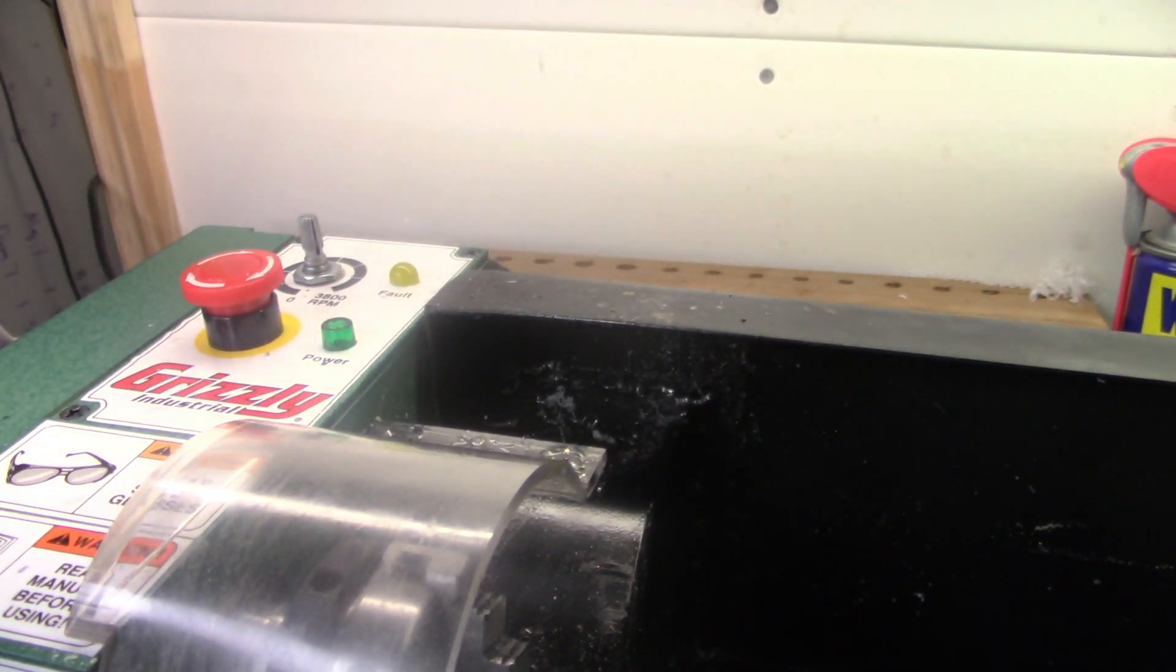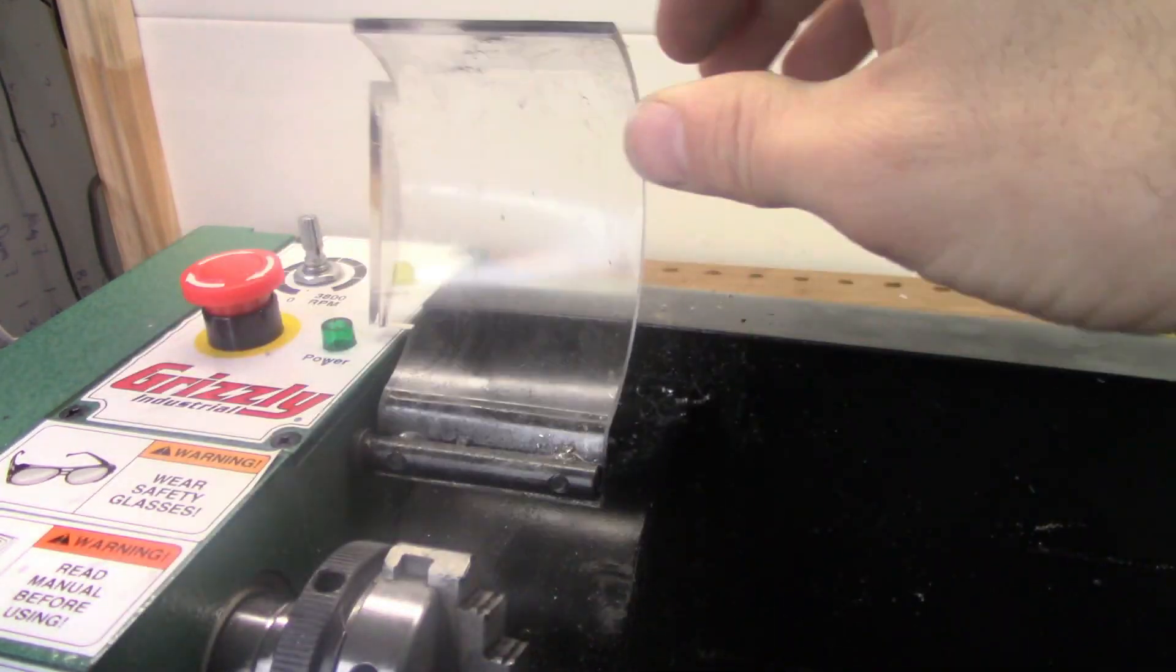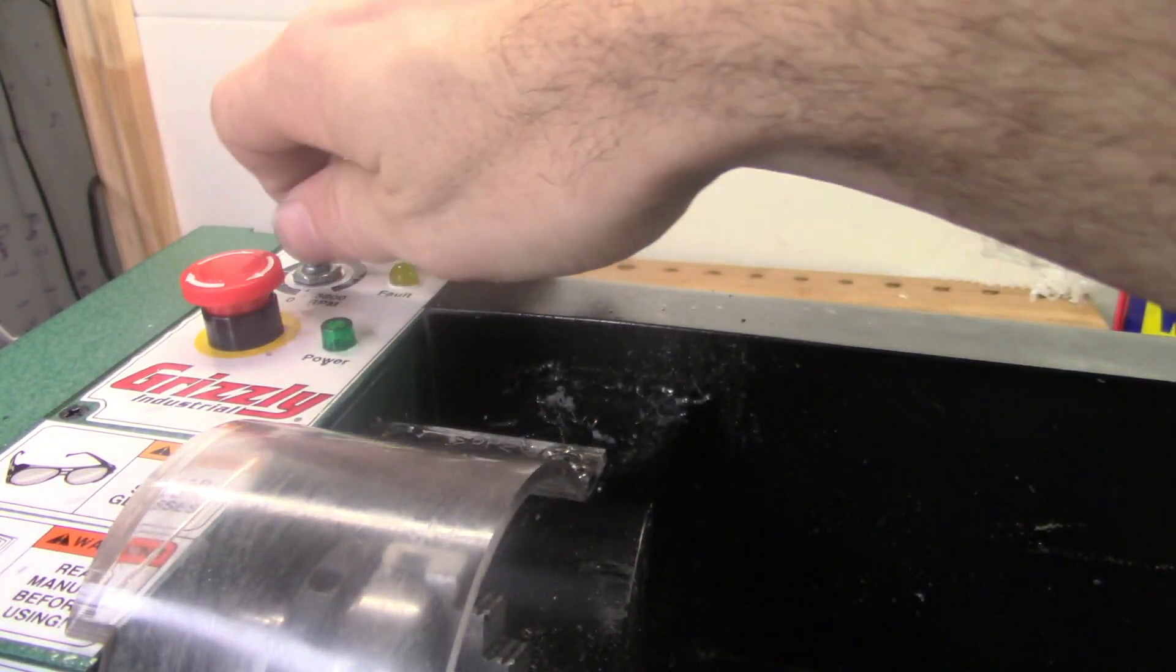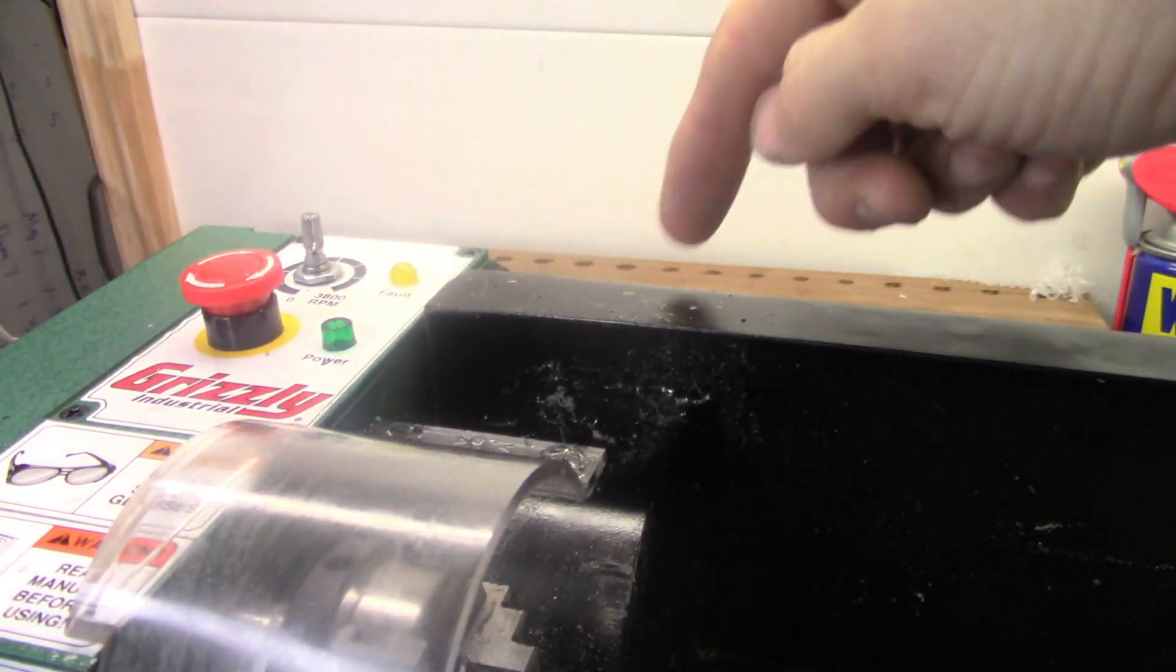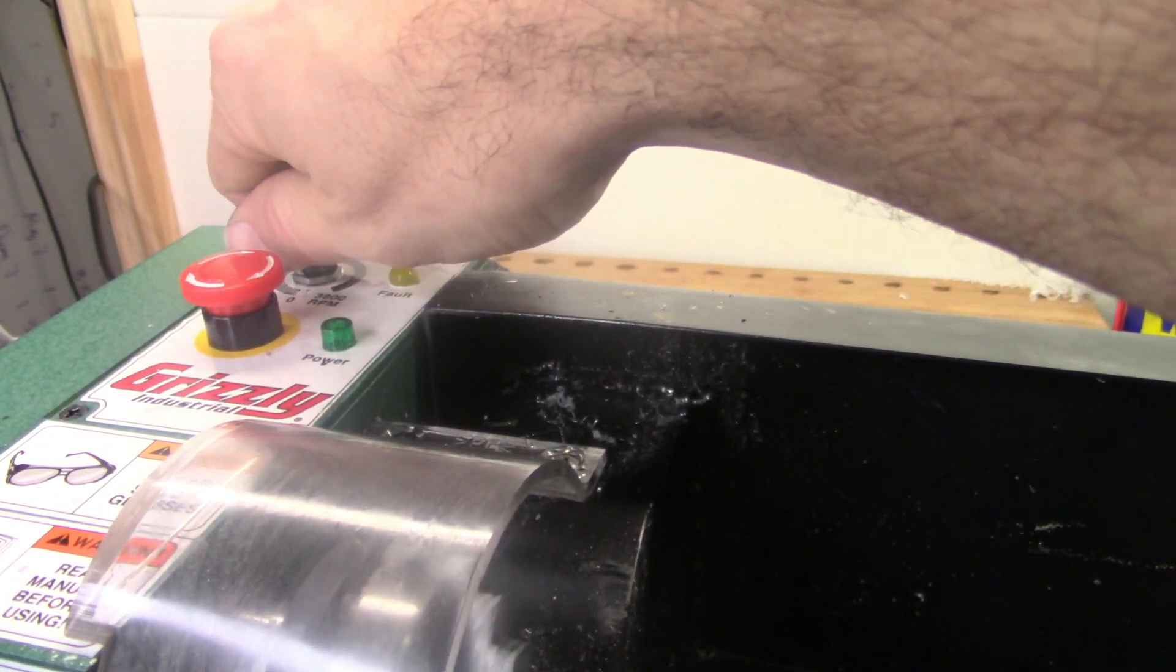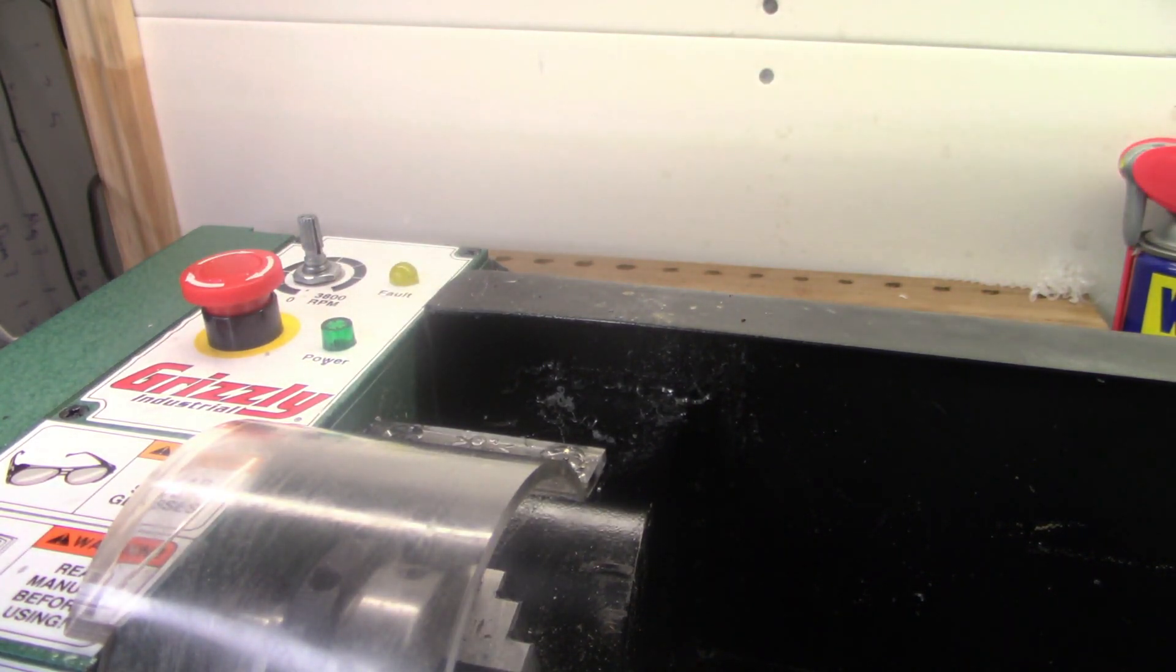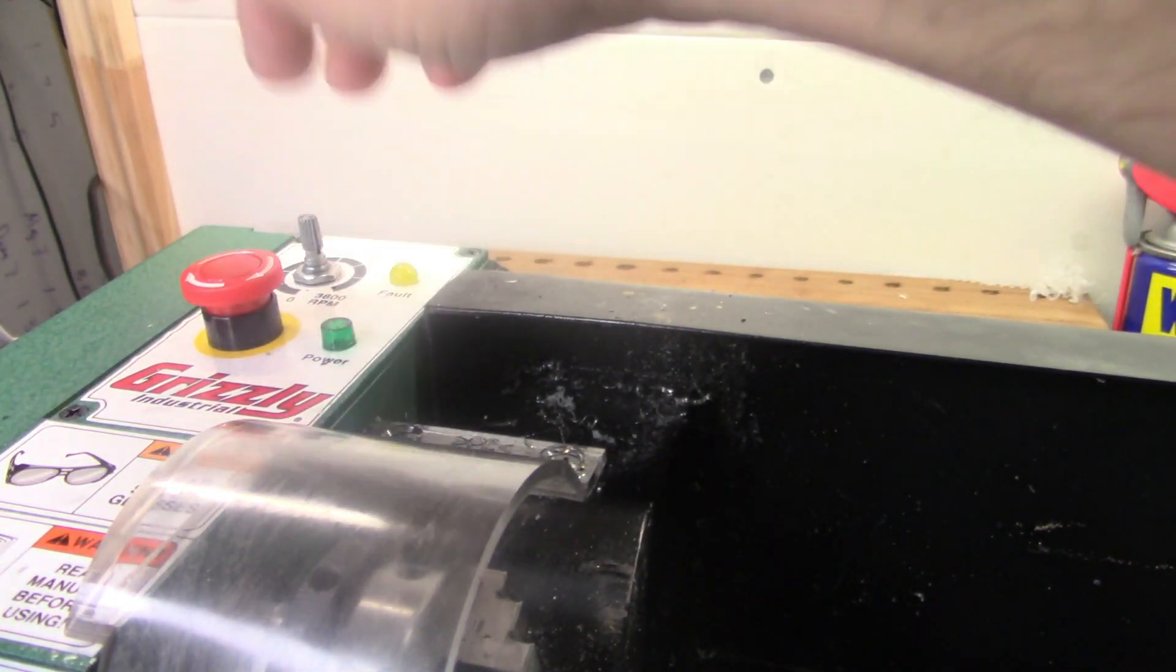Now there are some faults on this thing. What happens is, if this is up and you run this thing, if you reach down here and open this, it puts it into fault where it won't start back once that goes back down. This little light right here comes on and you have to reset it. If this thing gets into a bind, it does the same thing. It'll kick the motor out and this fault will come on and you'll have to reset everything.